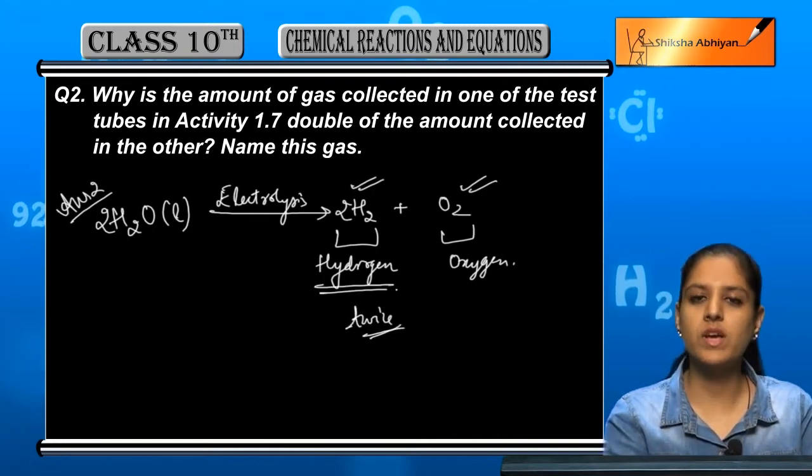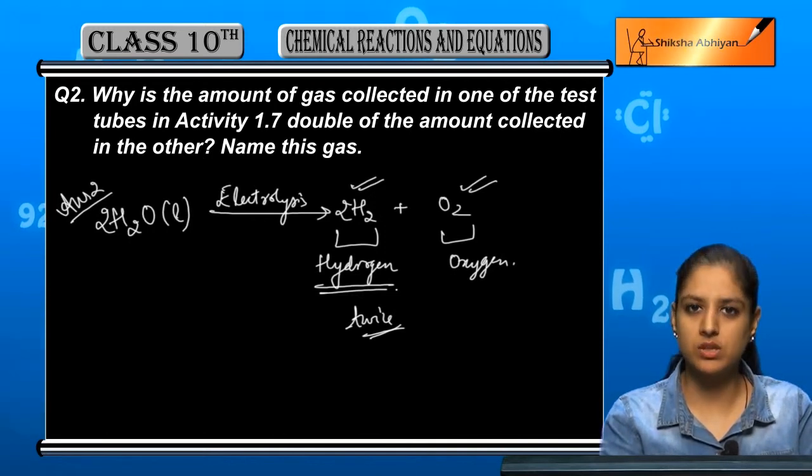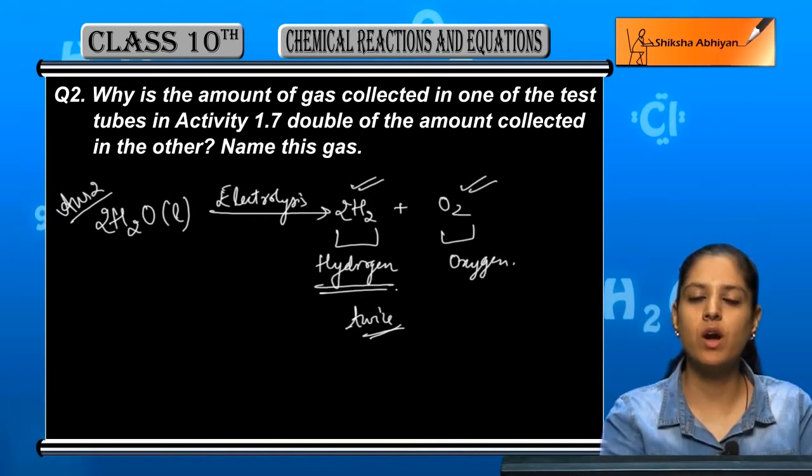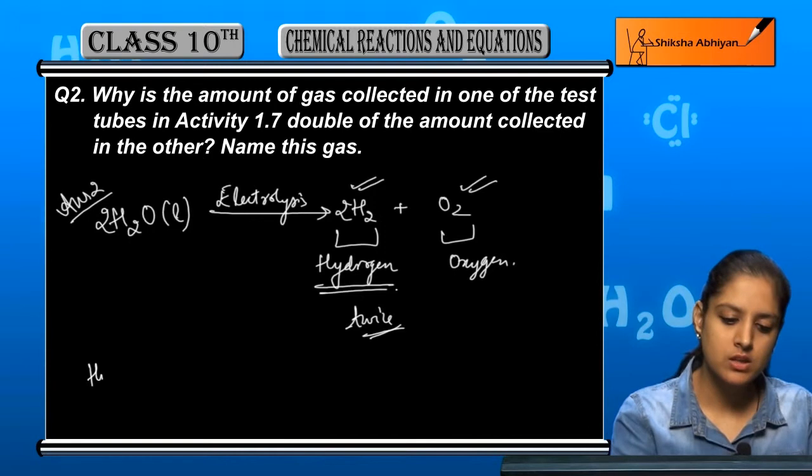So hydrogen is the gas that is double collected. Because in comparison to oxygen, we collect the molecules twice.